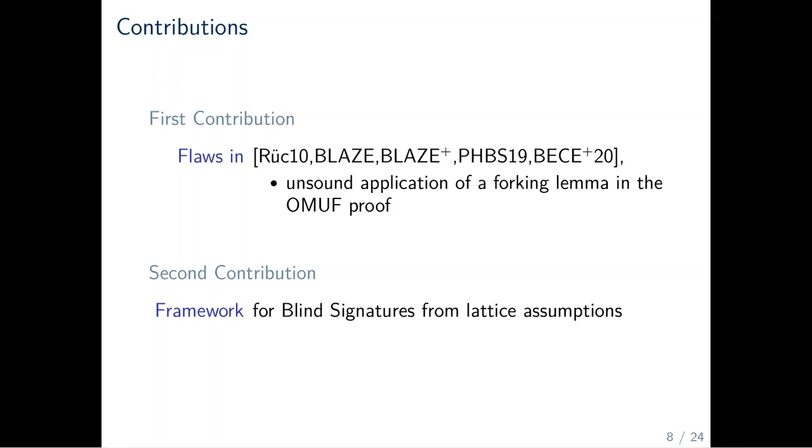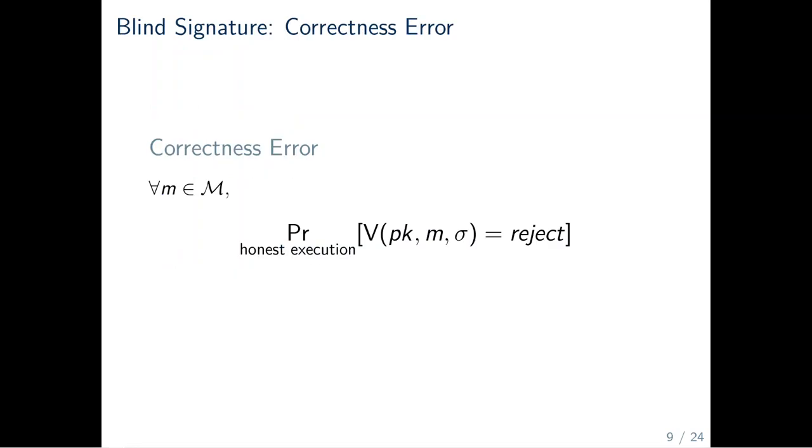Our second contribution is the generalization of the modular framework presented in HKL19. They show how to construct blind signatures from a special type of hash function. We extend that framework to the case with correctness errors, whereas HKL19 consider the error-free setting. In the lattice setting, blind signature schemes come along with some kind of correctness error. We say, the scheme has correctness error delta. For all messages M, the probability that the verify algorithm will output reject is bounded by delta.